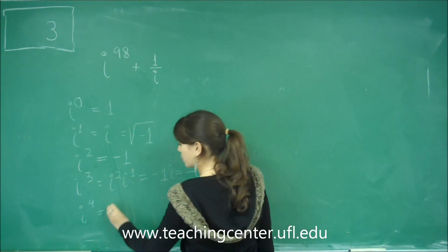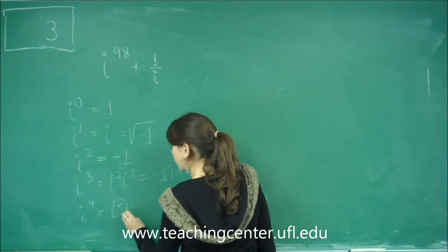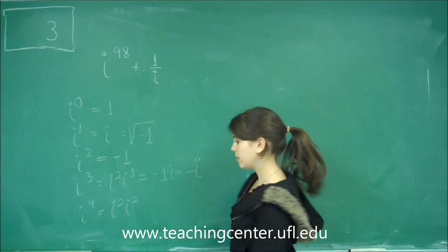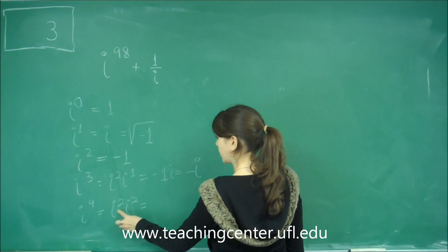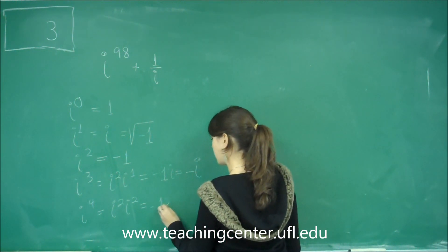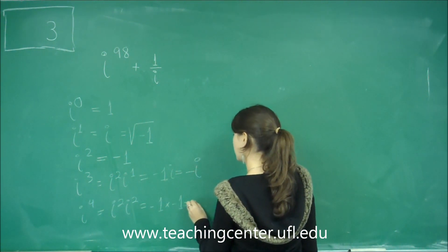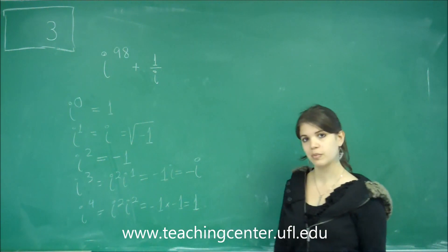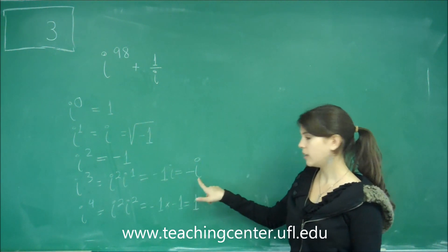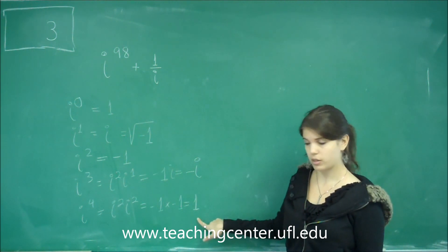And lastly, this one can be divided into i squared times i squared. 2 plus 2 is 4. So then, plugging in i squared, we get negative 1 times negative 1, which gives me 1. So this is the repeating pattern. We get 1, i, negative 1, negative i, and then positive 1.